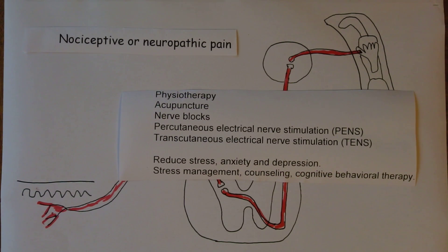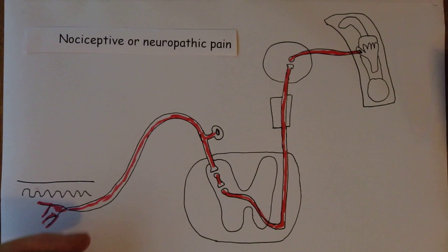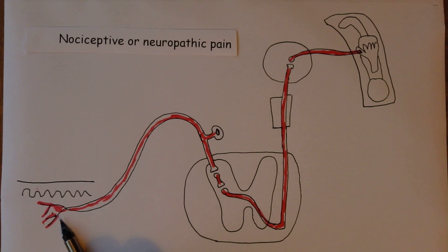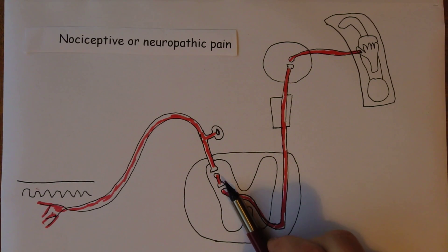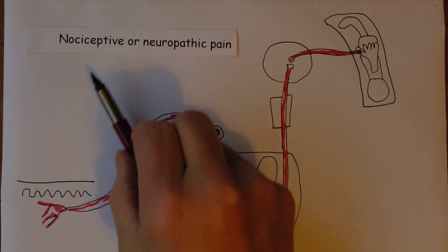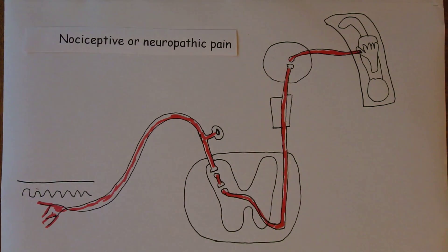Remember to distinguish between nociceptive pain, which is useful and warns about tissue damage — we still need to treat it because it's painful. In fact, if nociceptive pain is ongoing for a long period it can generate changes in the spinal cord which can lead to neuropathic pain. We must know the difference, because the treatment for nociceptive and neuropathic pain are different.